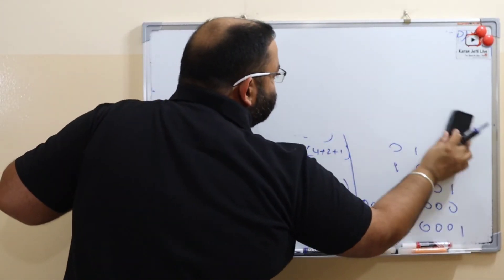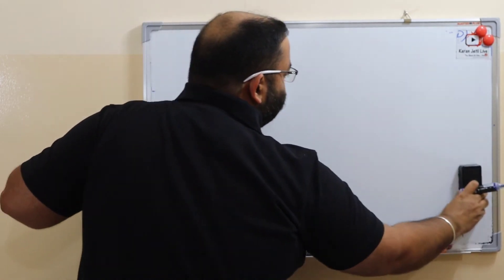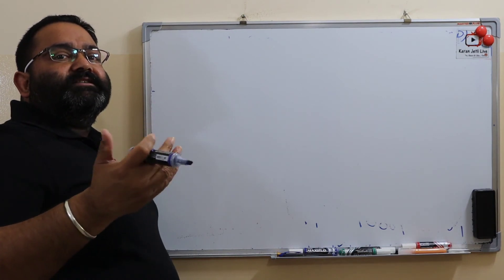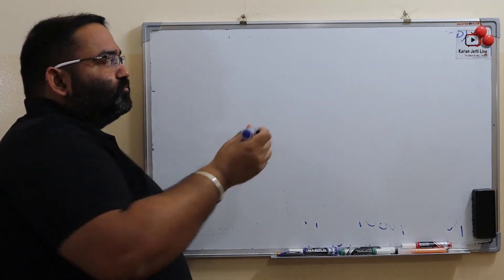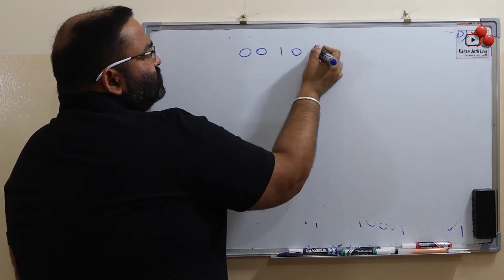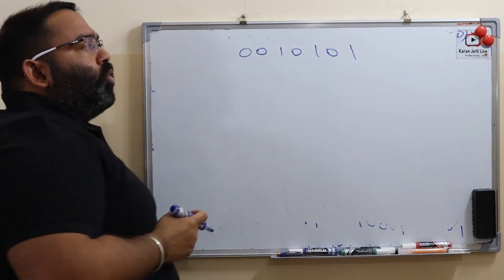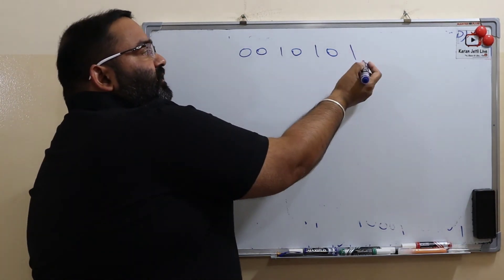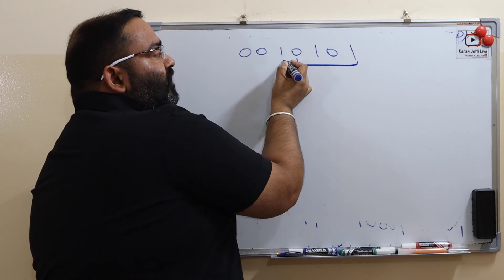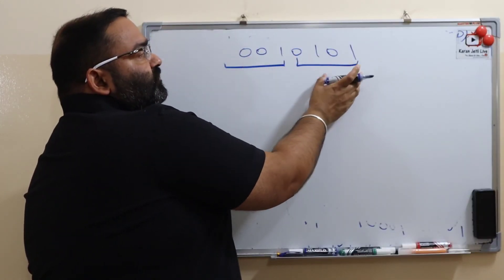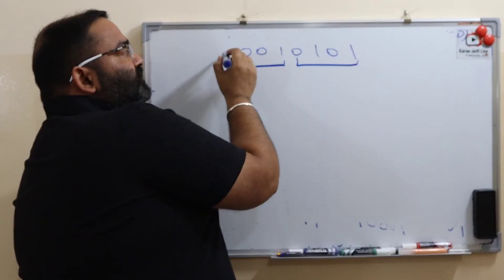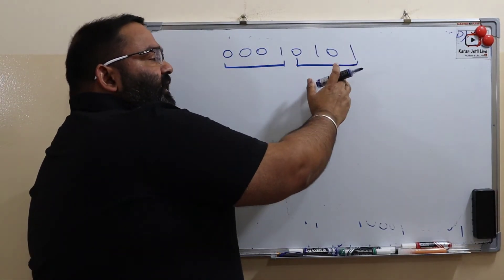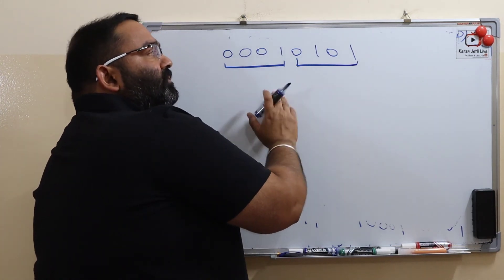If we have a number written in BCD code and we want to convert it back to a decimal number — suppose the number is 0010 1001 — we start from the right and group the bits in groups of 4. If one group has only 3 bits, we add a leading 0 to make it 4 bits. Then we get the decimal value of each 4-bit group.